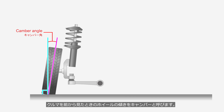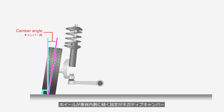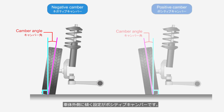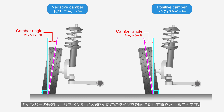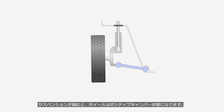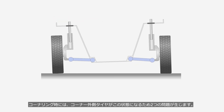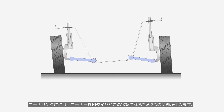The tilt of a wheel when viewed from the front is called camber. When the wheel is tilted inward toward the vehicle body, it's called negative camber; when tilted outward, it's called positive camber. The role of camber is to keep the tire upright against the road surface when the suspension compresses. When the suspension compresses, the wheels move into a positive camber position, and when cornering, the outer tire moves into this position, which causes two issues.